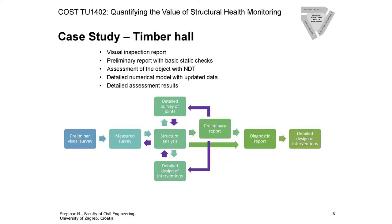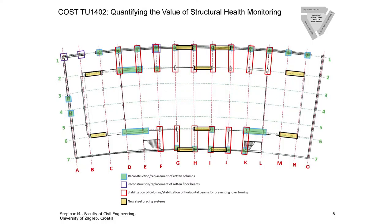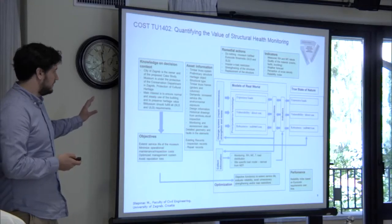We have been doing this assessment for several years. This was our flowchart: some preliminary work, NDT, preliminary reports, visual inspection, and so on. In the end we identified the main faults and instabilities on the roof. Also, the original project had no stabilizations, so we proposed some stabilization of the structure. I started preparing this presentation yesterday, so it may not be fully developed.